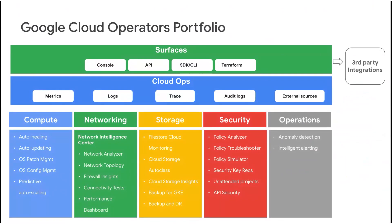However, as cloud platforms have evolved, day two activities, especially what is considered the operations space, have gotten clustered into two broad groups. First, many day two activities that were performed manually in the past have become automated and integrated into the core cloud platform itself. These are native data capabilities available with the compute, network, and storage services. For example, things like auto scaling, auto patching, auto healing, backups, and runtime security postures are now natively integrated into the platform services and are highly automated.